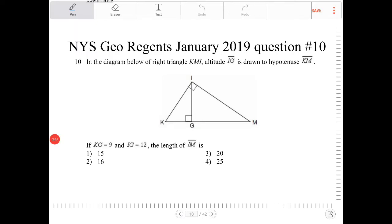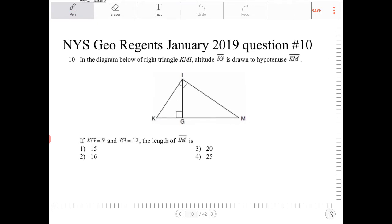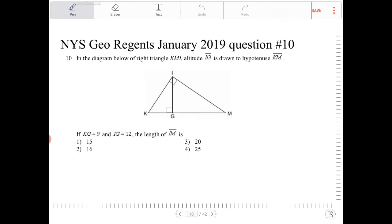In the diagram below of right triangle KMI, altitude IG is drawn to hypotenuse KM. If KG is equal to 9 and IG is equal to 12, the length of IM is... So this is another geometric mean problem.